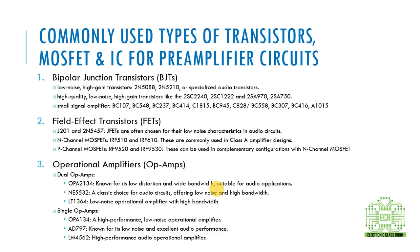Common types of transistor, MOSFET, and IC for preamplifier. The preamplifier commonly uses transistor and MOSFET IC. This is the preamplifier — low noise, high gain transistor. 2N588, 2N521. This is the specialized audio transistor — high quality, low noise, high gain transistor.